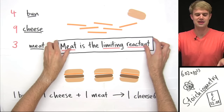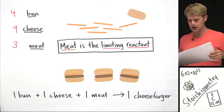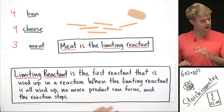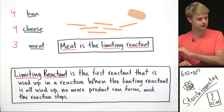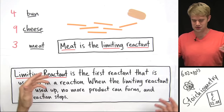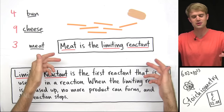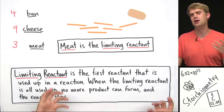We run out of meat and we can't make any more cheeseburgers. If this were a chemical reaction, we'd say that meat is the limiting reactant. Here's a definition: the limiting reactant is the first reactant that's used up in a reaction. When the limiting reactant is all used up, no more product can form and the reaction stops. Meat was the first ingredient used up as we were making cheeseburgers, and as soon as it's gone, we can't make any more.